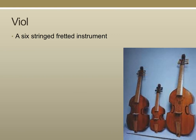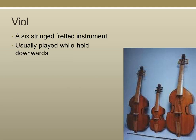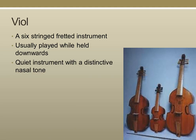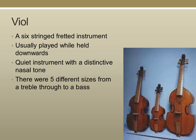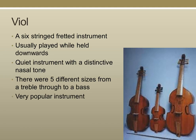The viol looks like a violin, but unlike a violin which has four strings, the viol has six strings and is also a fretted instrument, like the guitar. It was usually played held downwards, like the modern-day cello or double bass. It was a quiet instrument with a distinctive nasal tone, and there were five different sizes from treble through to bass. They were a popular instrument because they were quite portable, and were later replaced by the violin.